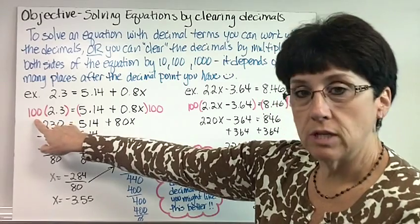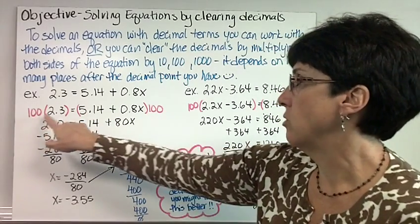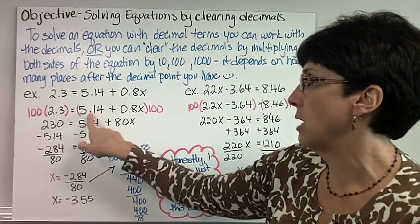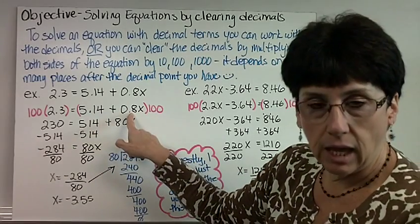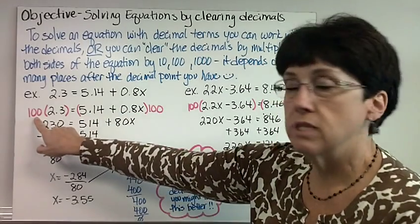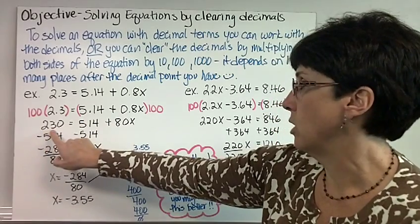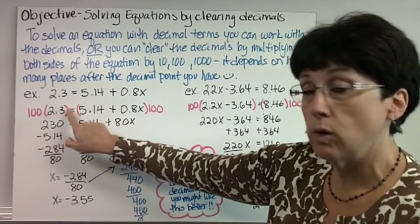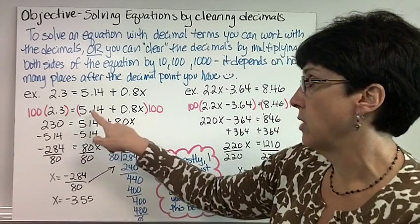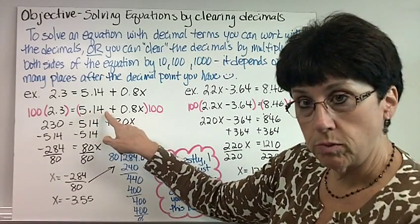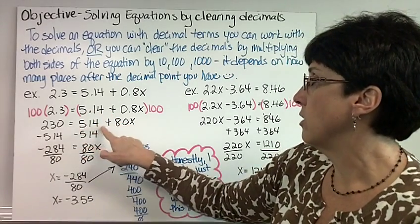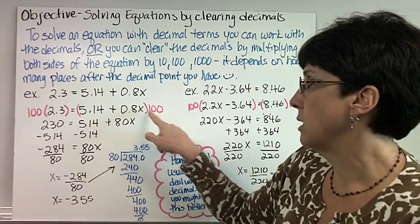So I multiply both sides of the equation by 100. 100 times 2.3 and 100 times 5.14 and 0.8x. That means move the decimal place over two. 230, because we move it over one would be 23, another one 230. Move it over two places, because you're multiplying by 100, equals 514.